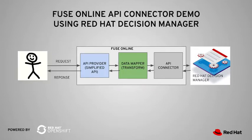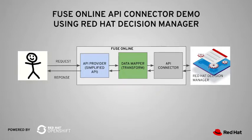So in this particular use case, what I'm going to do is show you how to use the API connector from Fuse Online to interface to an external service. In this particular case, the external service is a Red Hat Decision Manager, which uses business rules. I'm going to interface with the business rules engine because Red Hat Decision Manager has its own RESTful API.